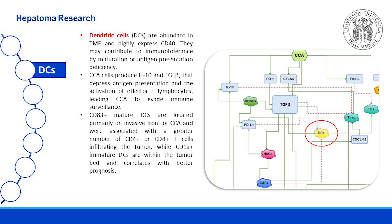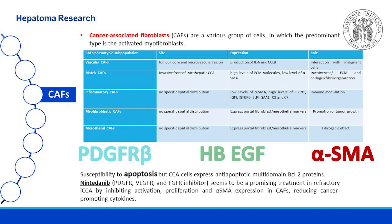CD83 mature dendritic cells are located primarily on the invasive front of cholangiocarcinoma and were associated with a greater number of CD4 or CD8 T cells infiltrating the tumor, while CD1A immature dendritic cells are within the tumor bed and correlate with a better prognosis.